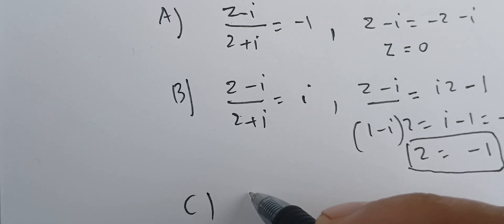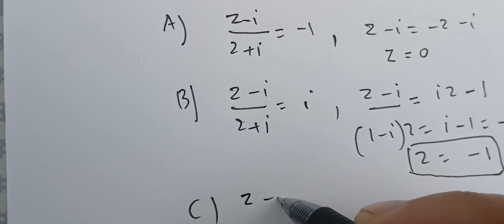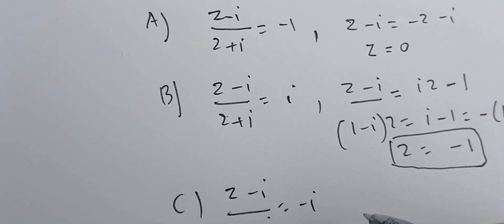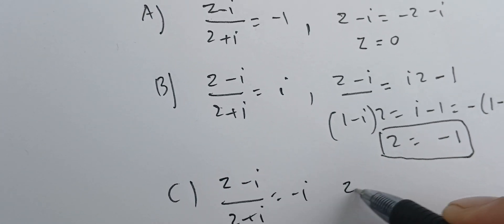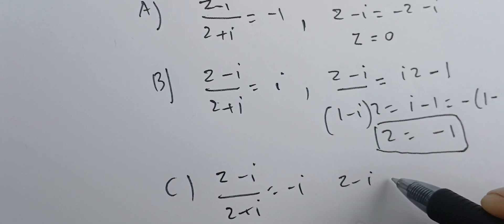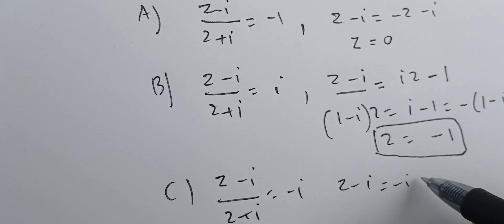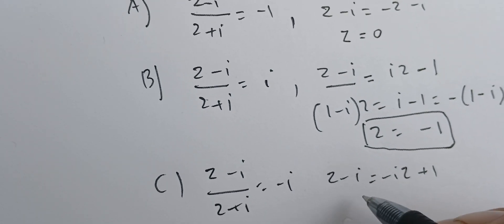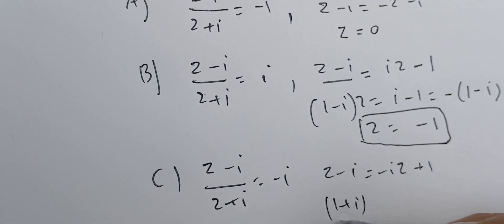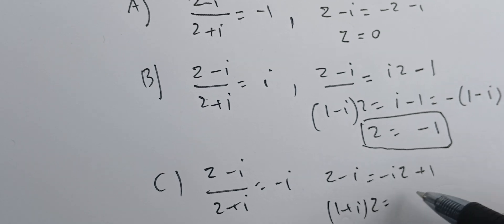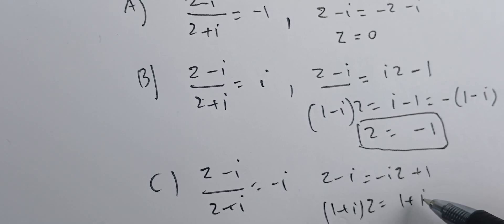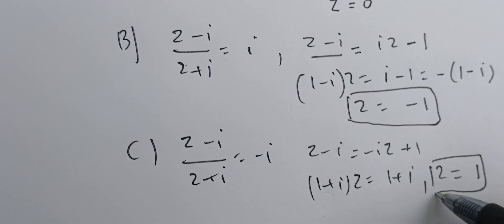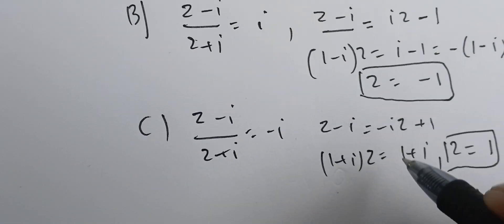Case three: (z minus i) over (z plus i) equals minus i. Multiplying gives z minus i equals minus i times (z plus i), so z minus iz equals one plus iz minus iz, which simplifies to z equals one. So the third solution is z equals one.